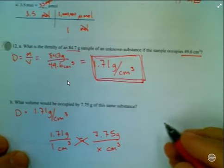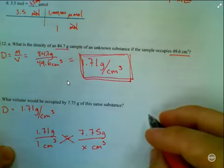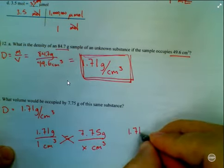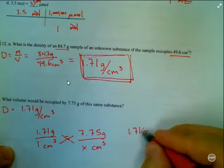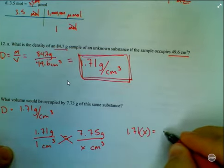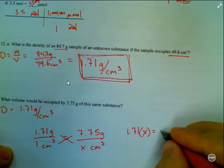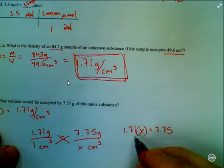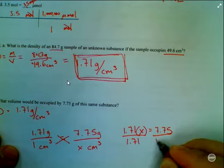So I'll end up with, let's see here, 1.71 times x, that's my unknown, equals 7.75 times 1, which is actually just 7.75. I want to solve for x. My good old-fashioned algebra skills, that cancels out.